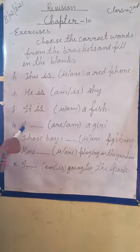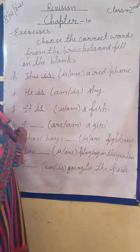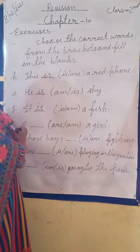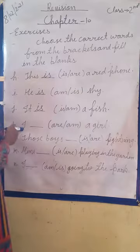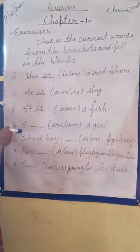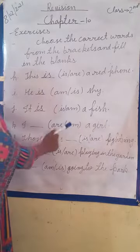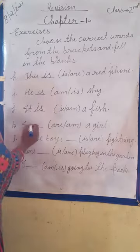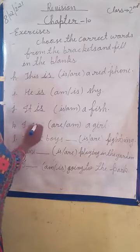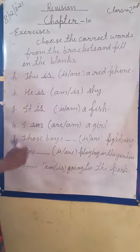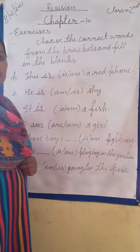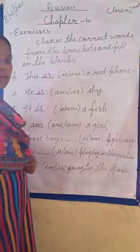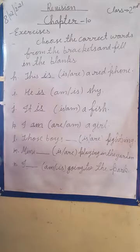Next, number K: the subject is 'I'. Yahan 'I' aaya hai. 'I' jo hai aapka pronoun hai, singular pronoun hai. Isliye 'I' ke saath hamesha 'am' ka use hota hai. So we will fill here 'am'. Our sentence is: I am a girl. Main ek ladki hoon.